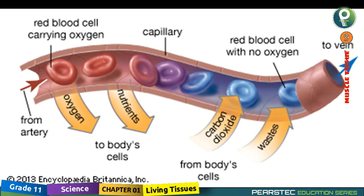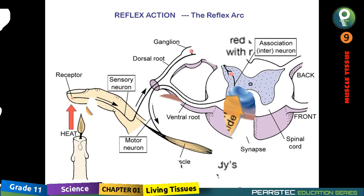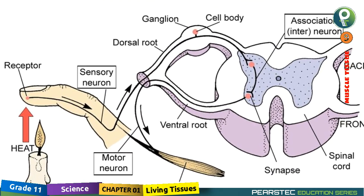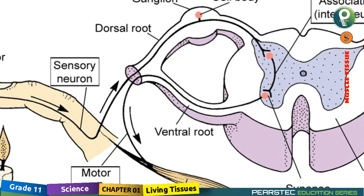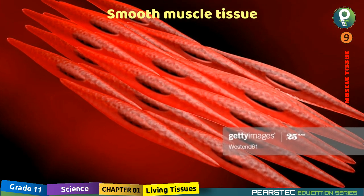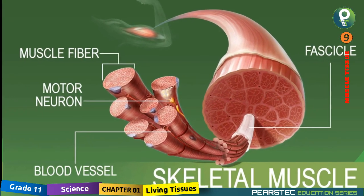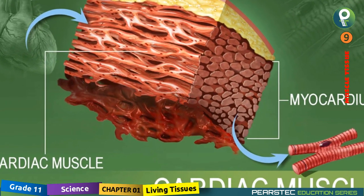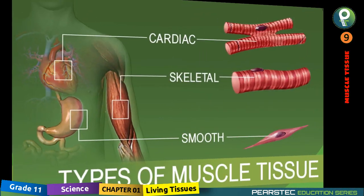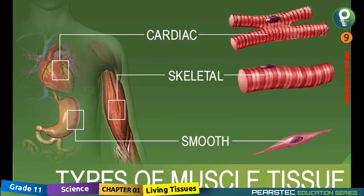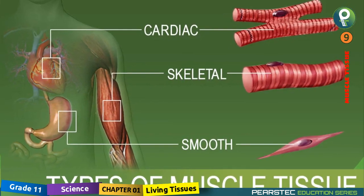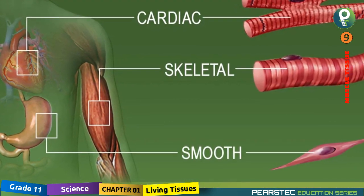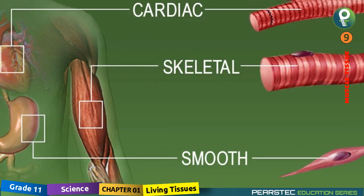Muscle tissue acts as one of the factors in responding in coordination. Muscle tissue is of three types: number one, smooth muscle tissue; number two, skeletal muscle tissue; number three, cardiac muscle tissue. After learning these three categories, you will be able to differentiate and compare the characteristics of different muscle tissues.